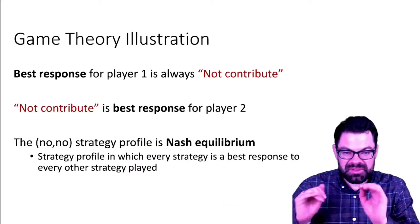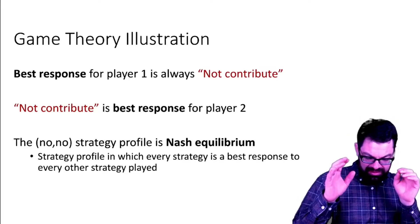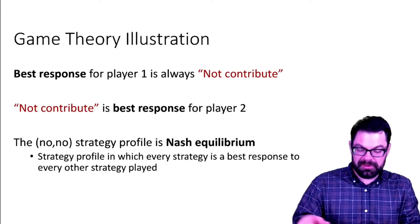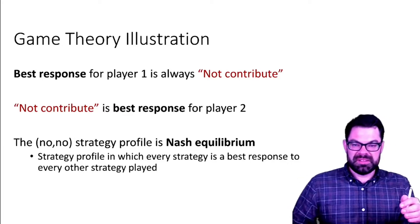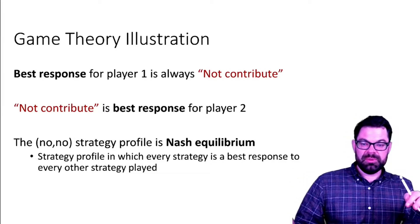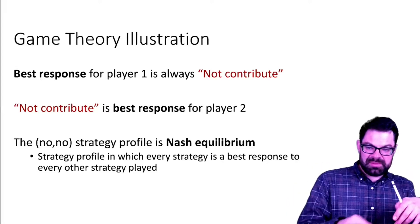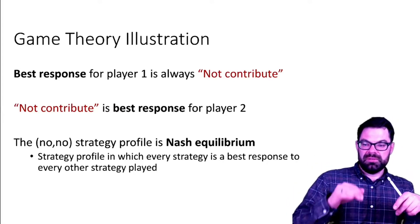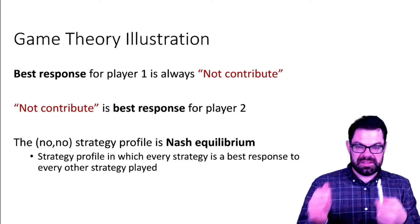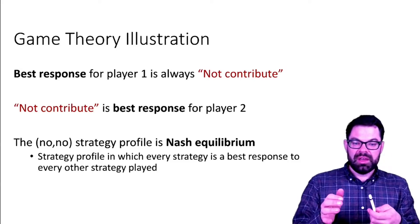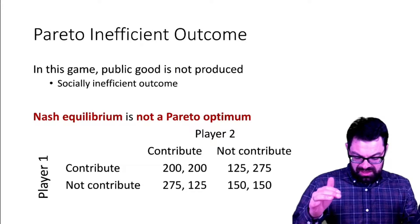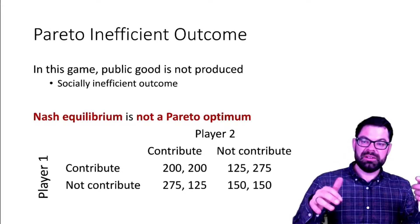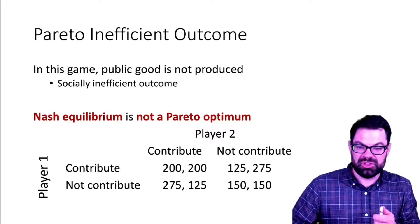Here is the summary of that very simple game. The best responses for each player is not to contribute. That strategy profile, not contribute/not contribute, is a Nash equilibrium and we're in a situation where we are actually in an outcome that is Pareto inefficient.